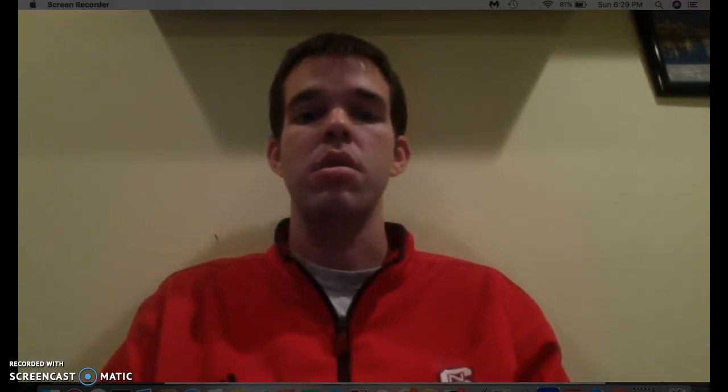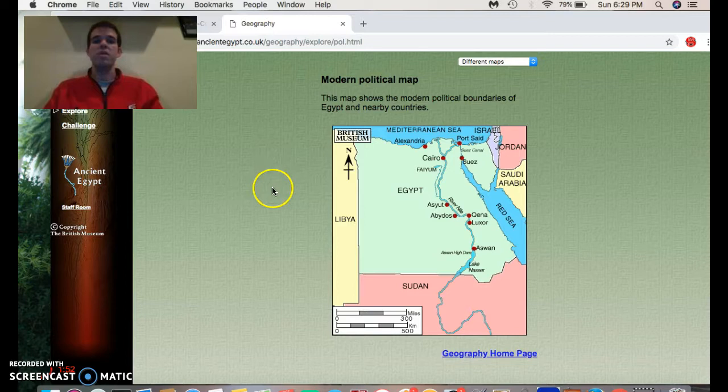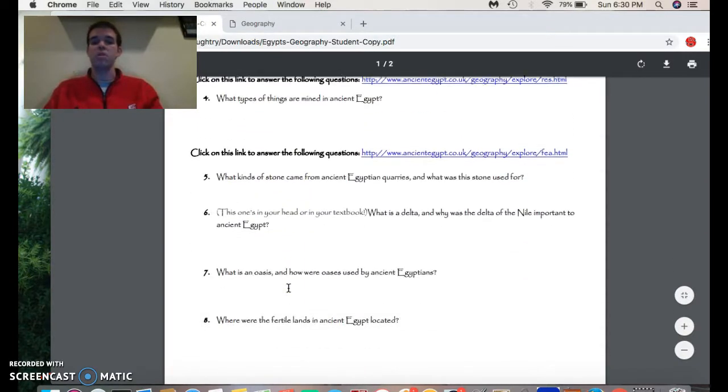So for this assignment you are going to click on this document which is in Google Classroom. It says Ancient Egyptian Geography Webquest. Your task is to click on each of these links. It will take you to a different website.